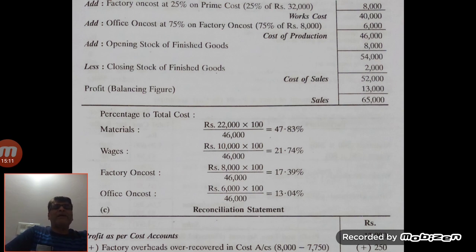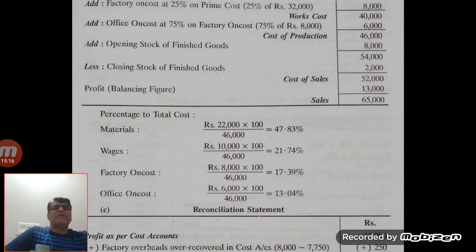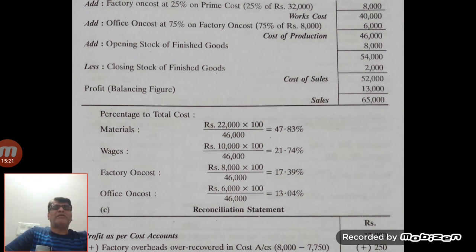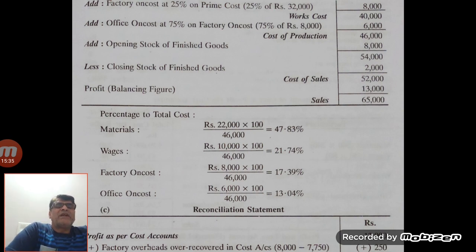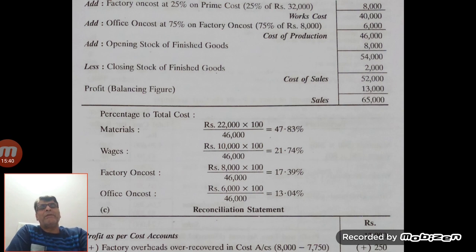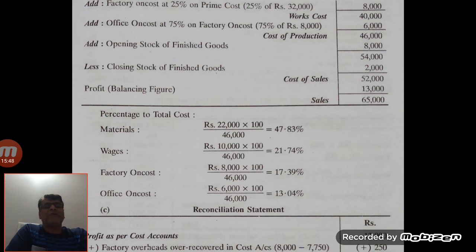Now calculate the percentage of each item to total cost. Material: 47% of total cost. Wages: 21% of total cost. Factory on-cost: 17.39% of total cost. Office on-cost 6,000: approximately 12.46% of total cost. All cost percentages as required by the question have been calculated. Profit as per cost sheet is 13,000, and as per financial book it is different at 13,150.